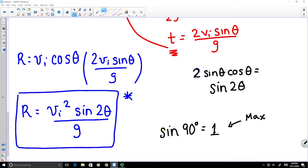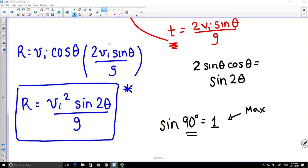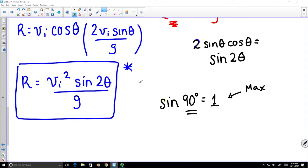So 90 degrees gives our sine function a maximum for this sine function. So if the maximum for this here is 90 degrees, our max range is when 2 theta will be equal to 90 degrees.